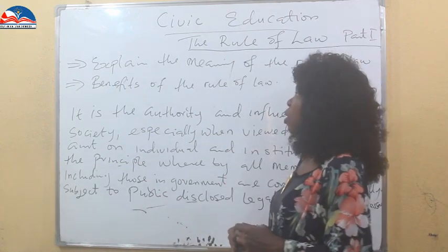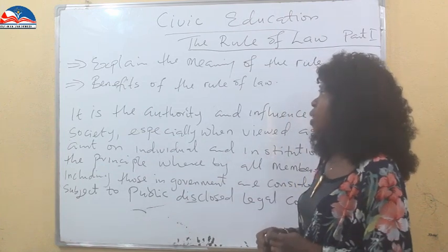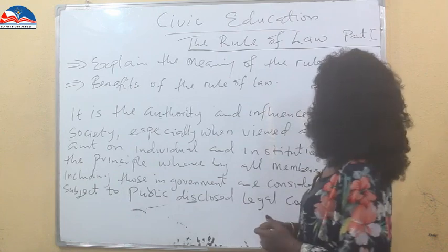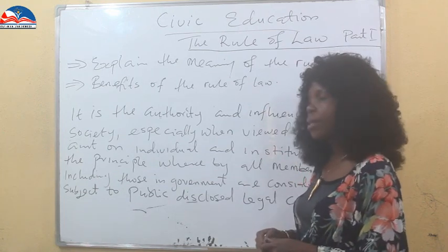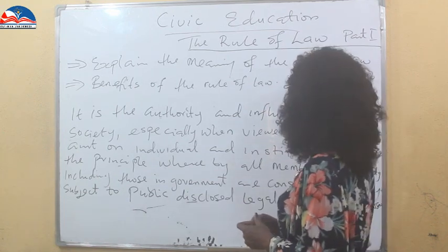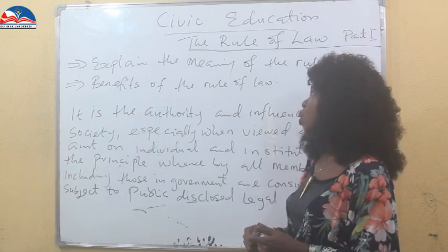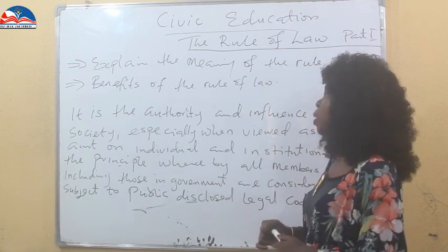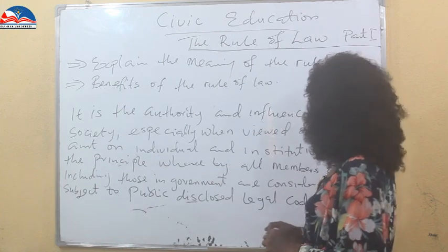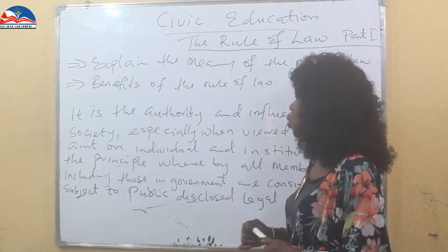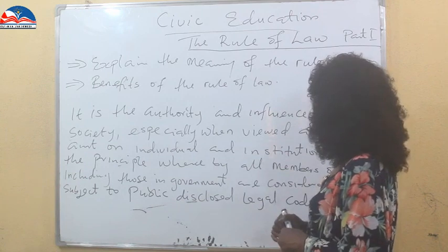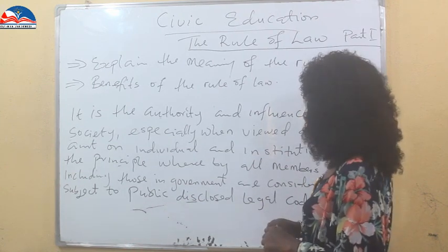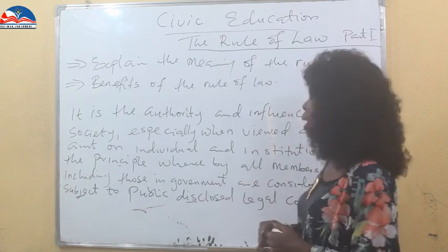The rule of law can be said to be the authority and influence of law in society, especially when viewed as a constraint on individual and institutional behavior. It is the principle whereby all members of a society, including those in government, are considered equally subject to publicly disclosed legal codes and processes.